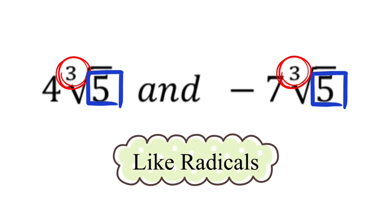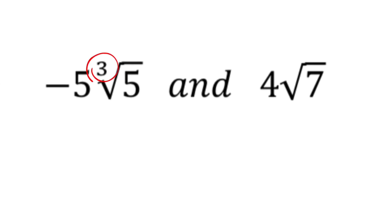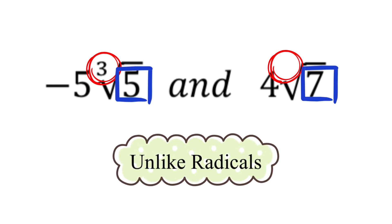Now let's take the next example. We have a 3 and an invisible 2 as the indices, so the two indices 3 and 2 are not the same — we can say this is unlike radicals. We also have 5 and 7 as radicands and they're not the same, which further verifies that these two are unlike radicals.